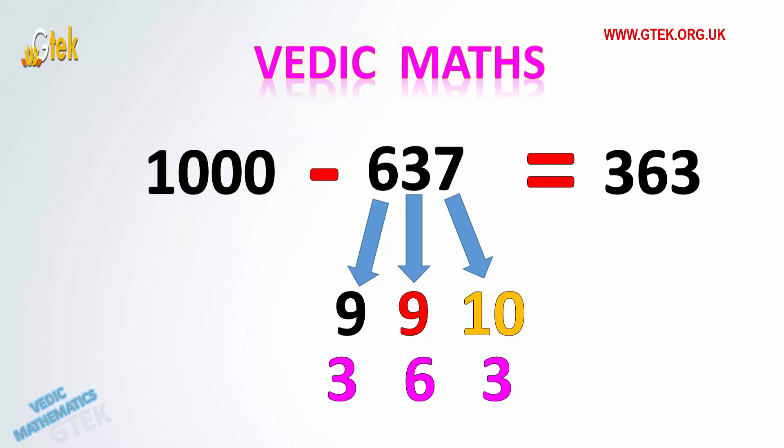Let's see another example here. 1000 minus 637 equals 363 which is again with the same logic: 10 minus 7 equals 3, 9 minus 3 equals 6, and again 9 minus 6 equals 3. So the answer is 363.